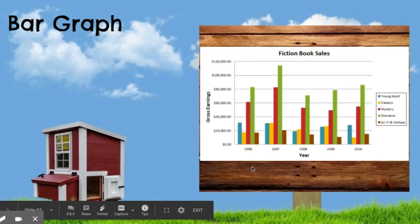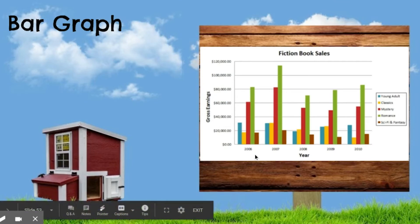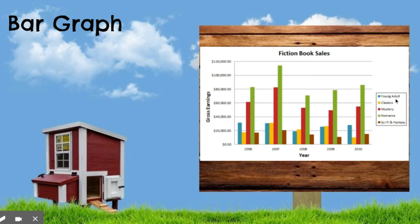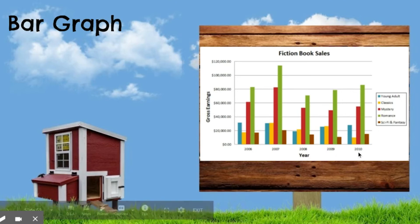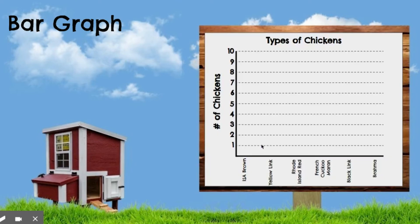You might also see a bar graph that looks like this — it has multiple pieces of data on the same graph. You'd have your categories and a key on the side: young adult is blue, classics are yellow, mystery are red, romance is green, and sci-fi is fantasy. This could represent data across different years, like 2006 and 2007, and how much was made. But we aren't going to be focusing on that today — we're focusing on just one piece of data on the bar graph.